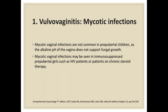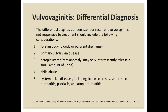Mycotic vaginal infections are not very common among pre-pubertal children, as the alkaline pH of the vagina does not support fungal growth. Mycotic vaginal infections may be suspected among immunosuppressed pre-pubertal girls, such as HIV patients or patients on chronic steroid therapy. The differential diagnosis for pediatric vulvovaginitis includes foreign body, primary vulvar skin disease, ectopic ureter, child abuse, and systemic skin diseases such as lichen sclerosis, seborrheic dermatitis, psoriasis, and atopic dermatitis.